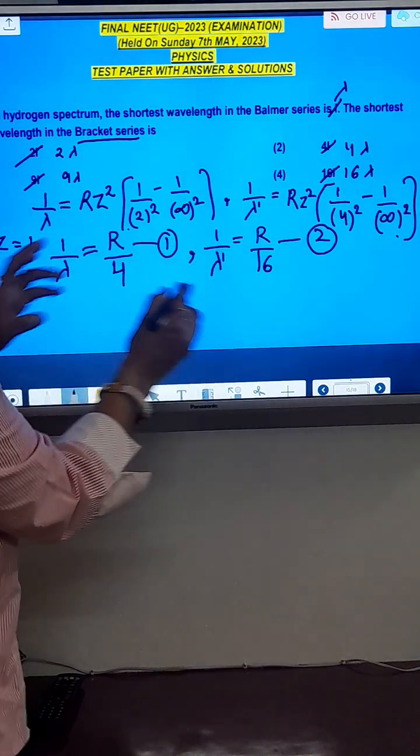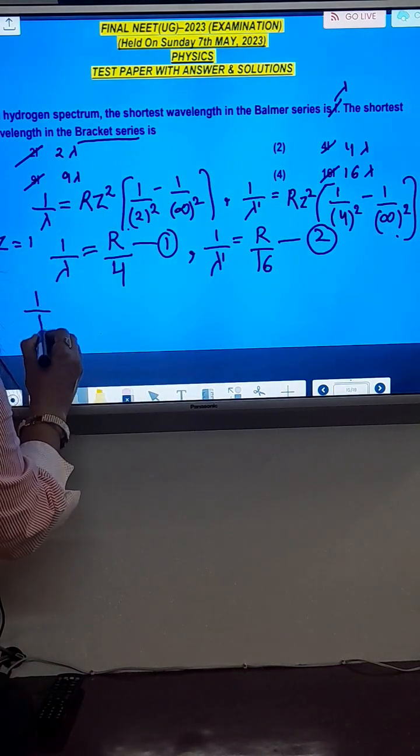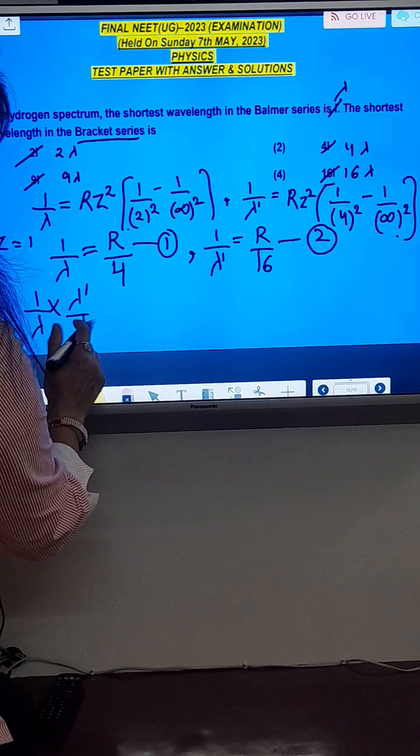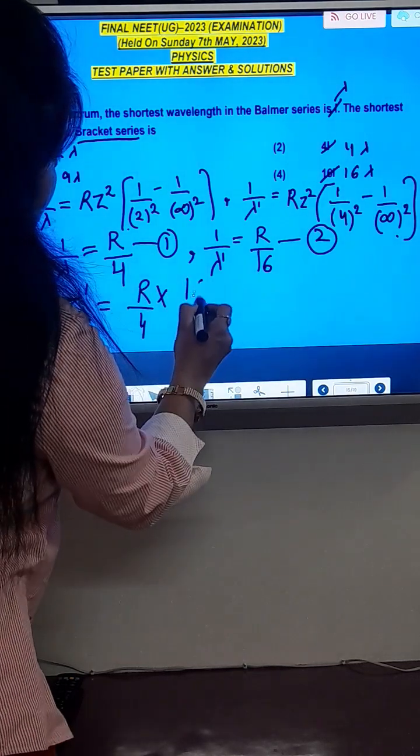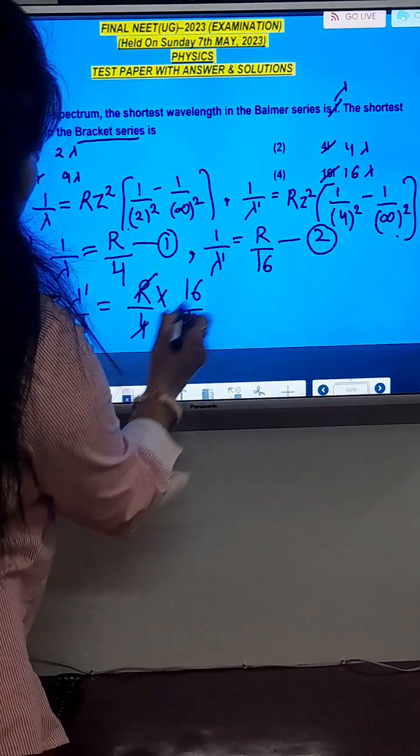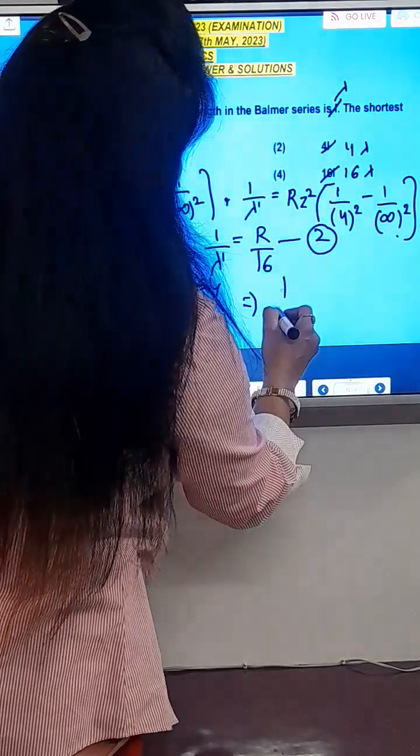Now divide equation 1 by 2. This becomes lambda dash upon lambda equals R upon 4 times 16 upon R. Cancel it out, so this becomes lambda dash upon lambda...